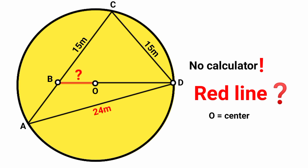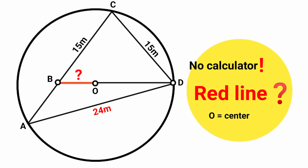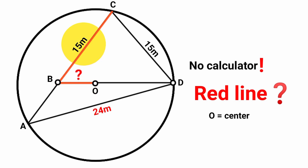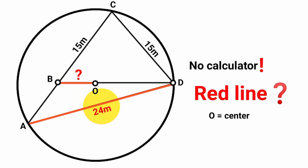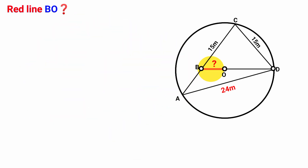Hi friends, I want to show you a perfect method with which you can solve this question without the help of a calculator. We are to calculate the length of the red line, referring to this line segment BO. We have the length of side BC to be 15 meters, side CD is also 15 meters, and side AD is 24 meters. This point O is the center of the circle. So how can we calculate the length of this segment BO?